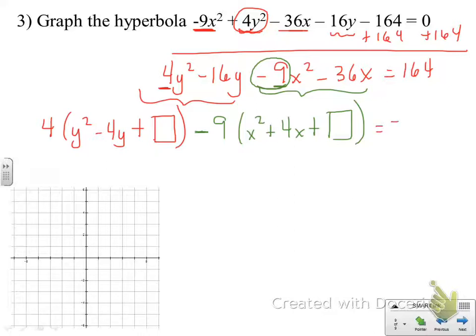Now, our equation was equal to this constant of 164. But remember, we're going to have to balance this number that we put over here for the y terms. So we're going to have plus 4 times that magic number for the y terms. And we're going to have to balance the number that we put in for the x terms. That number is being multiplied by a negative 9. So I'm actually subtracting 9 times that magic number for the x terms.